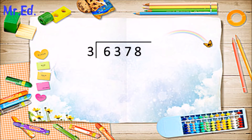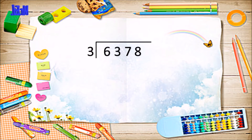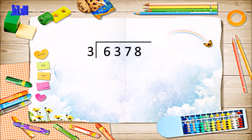Let's look at a short division calculation and recap what we've already learned. The large number needs to be divided by the smaller number — the dividend by the divisor. The divisor in this case is three and the dividend is six thousand three hundred and seventy eight. We can break six thousand three hundred and seventy eight into smaller parts, so we find out how many times three goes into six thousand.